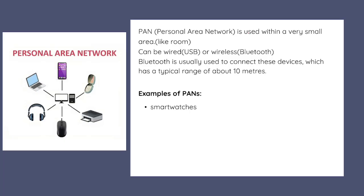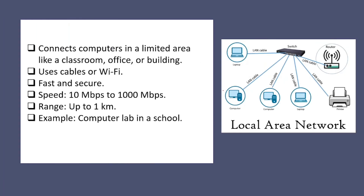PAN can be wired or wireless. Wired uses USB; wireless uses Bluetooth. Bluetooth typically travels only up to 10 meters. An example of PAN is a smart watch. These three points plus one example are what you should mention for PAN.